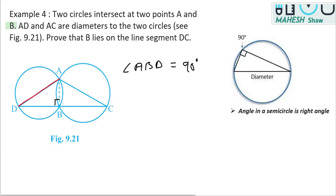On the other side, as you can see here, AC is also the diameter of the circle. Therefore, this angle—angle ABC—is also equal to 90 degrees.